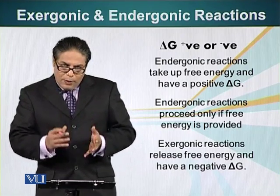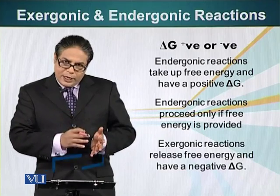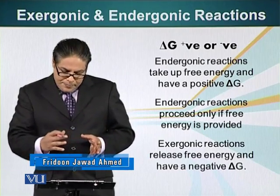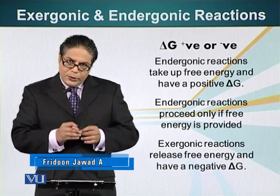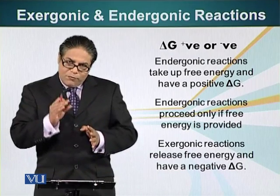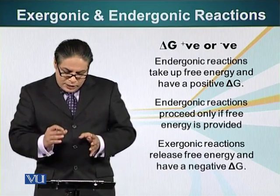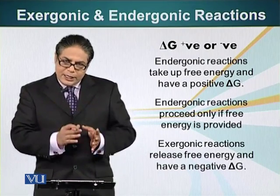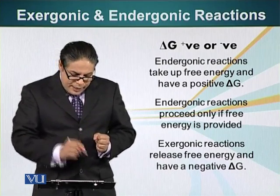Exergonic reactions are the ones which release energy — energy is released from the system. In the case of endergonic reactions, where energy has to be provided to the system, the value of delta G is a positive number. For exergonic reactions, which release energy, the delta G is a negative number.